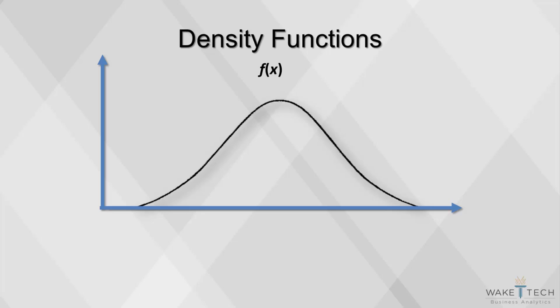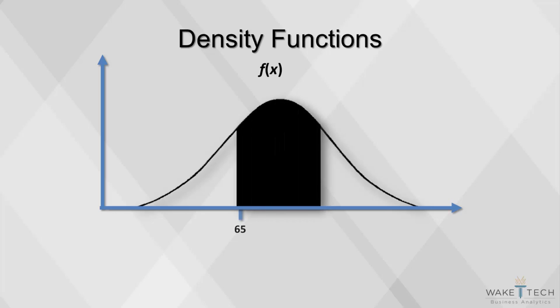Probabilities are found from a density function as areas under the curve. So, for example, the shaded portion under this bell curve represents the probability of x being between 65 and 75.